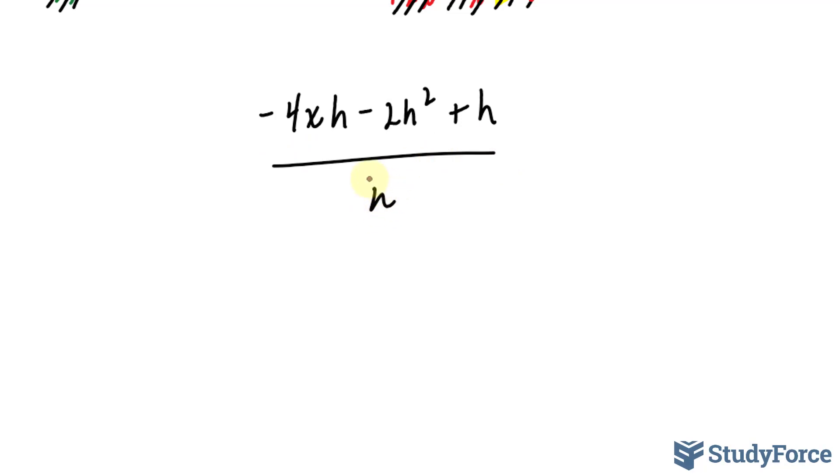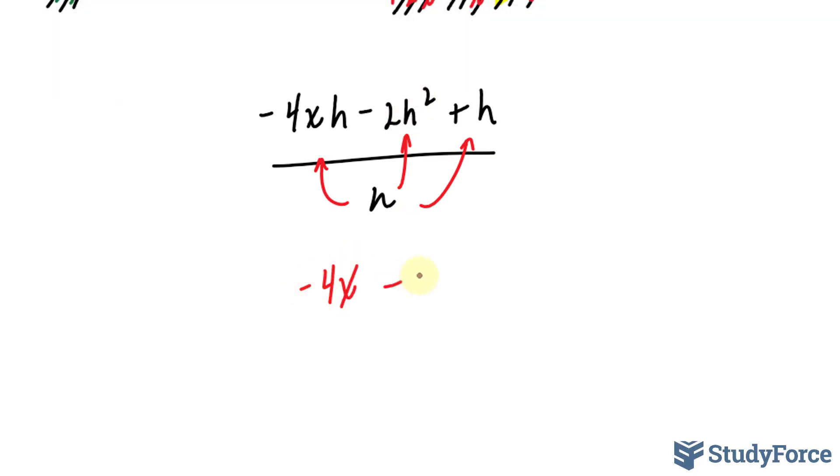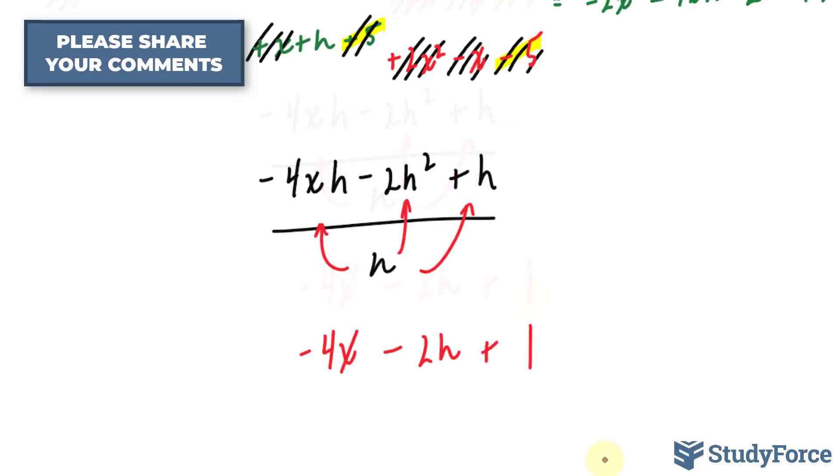Now, we can distribute this denominator to each of the terms above. That way, we can reduce the terms above. We have minus 4x, this becomes minus 2h, and this becomes 1. And there you have it. That is the simplified expression.